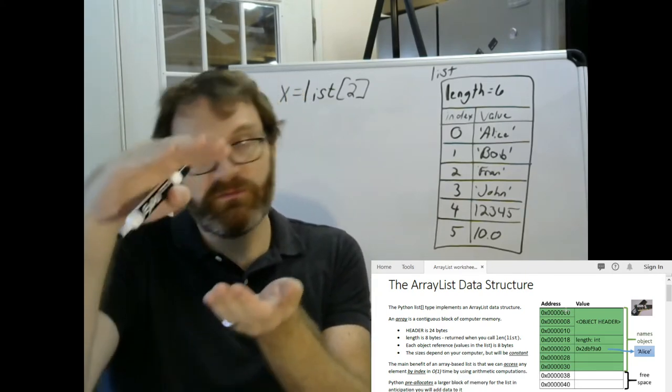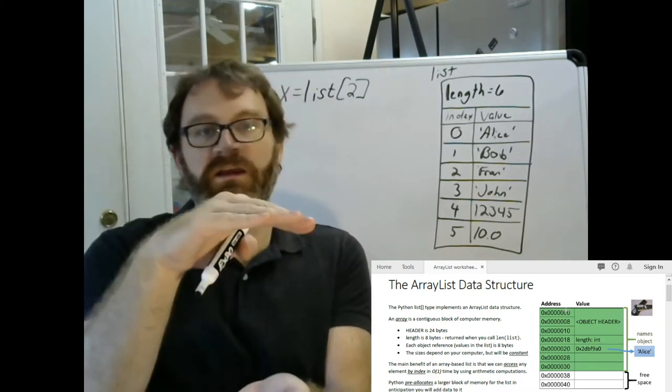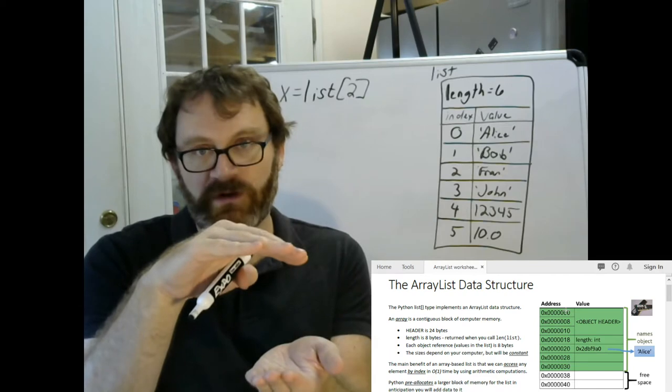So all the data related to a list in Python is in one area of memory. It'll be a different area every time you run the program, but it's all together. All the list's information is right there together.